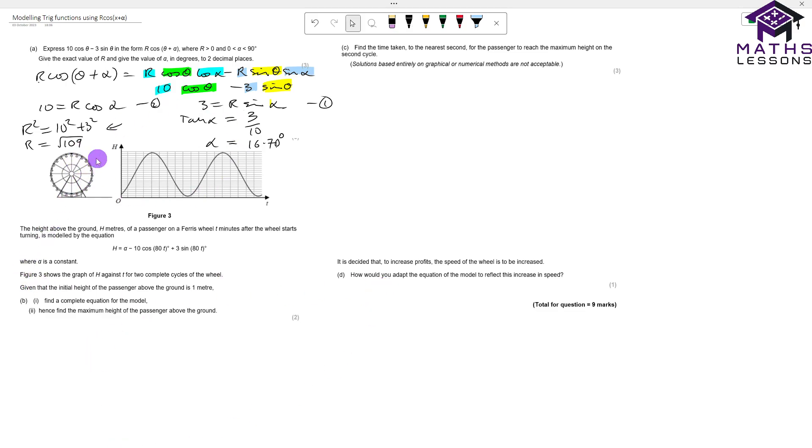Now moving on, we're going to apply this to this Ferris wheel problem where it starts here, goes up, goes down, goes up. The height above ground h meters is modeled by this equation: h equals α minus 10cos(80t) plus 3sin(80t). We want to find a complete equation for the model. We know that initial time is one meter above, so at t equals 0, we know that h will equal 1.